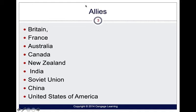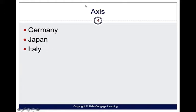The Allies were made up of the U.S., Britain, France, New Zealand, India, the Soviet Union, and China. The Axis was primarily Germany, Italy, and Japan.